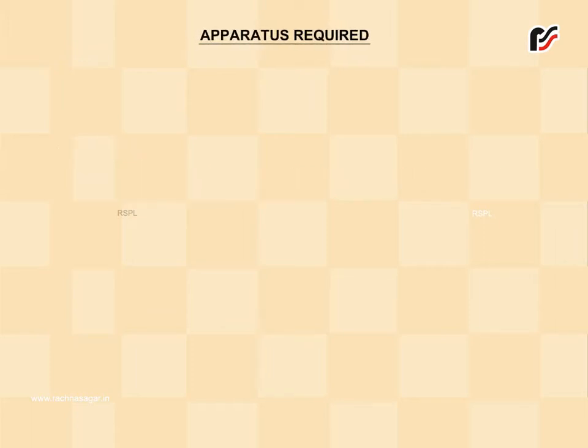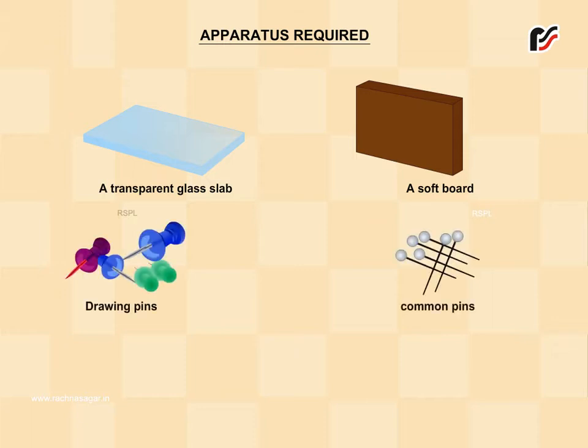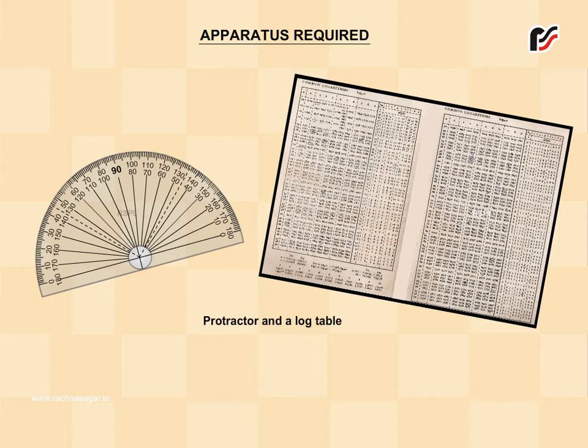Apparatus required: A transparent glass slab, a soft board, drawing pins, common pins, white sheet, protractor, and a log table.